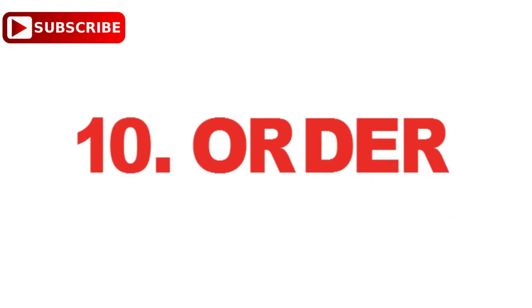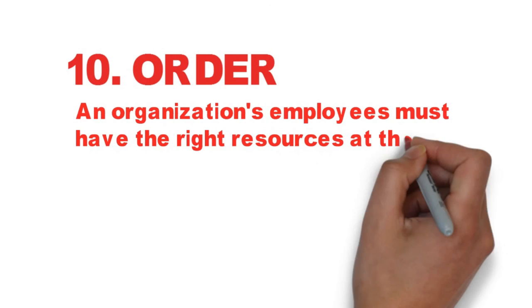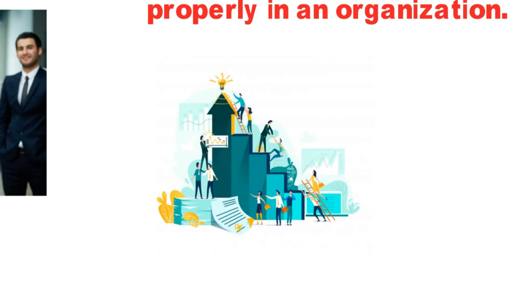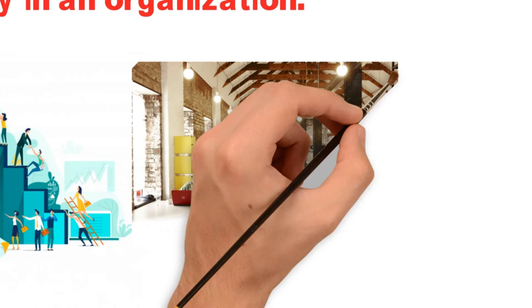Principle number ten: Order. According to this principle, an organization's employees must have the right resources at their disposal so that they can function properly. In addition, that is the manager's responsibility — the work environment must be safe and clean. For example, the Google office, whose work environment is very safe, clean, and colorful.